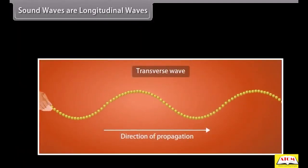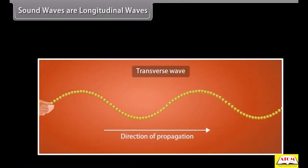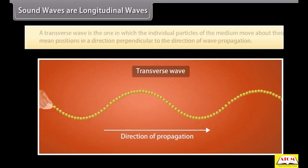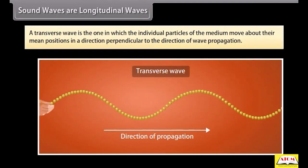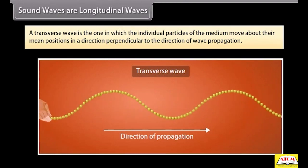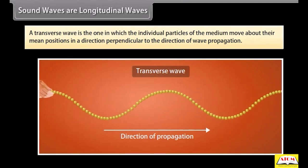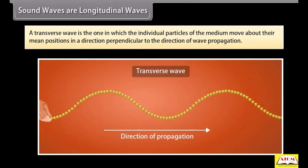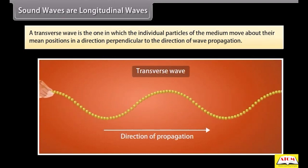There is also another type of wave called a transverse wave. A transverse wave is the one in which the individual particles of the medium move about their mean positions in a direction perpendicular to the direction of wave propagation.